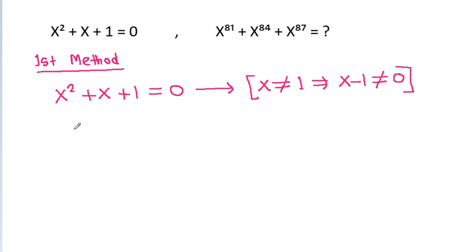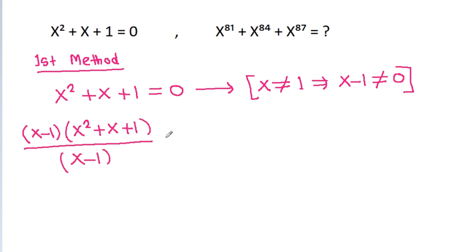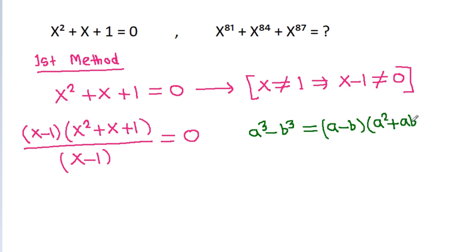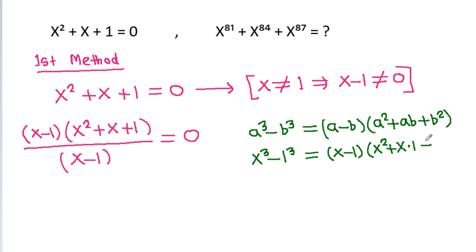So if we multiply x squared minus x minus 1 with x minus 1 and divide by x minus 1, it is equal to 0. And a cubed minus b cubed is equal to a minus b times a squared plus ab plus b squared. So x cubed minus 1 cubed will be equal to x minus 1 times x squared plus x times 1 plus 1 squared.